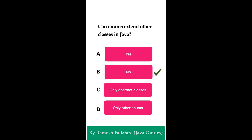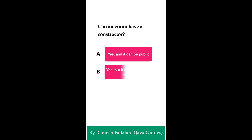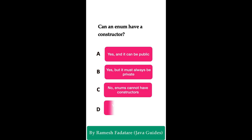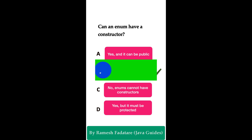Welcome to Java quiz series. Here is one more question: Can an enum have a constructor? Option A: yes, it can be public. Option B: yes, but it must always be private. Option C: no, enums cannot have constructors. Option D: yes, but it must be protected. The correct answer is option B: yes, but it must always be private. Enums can have constructors, but they are always private to prevent the creation of new enum instances. This is an important interview question to remember.